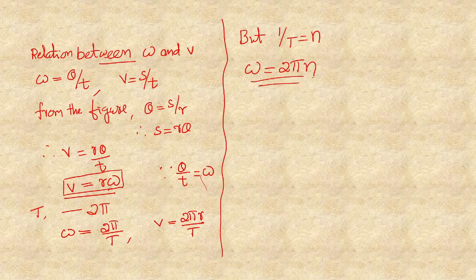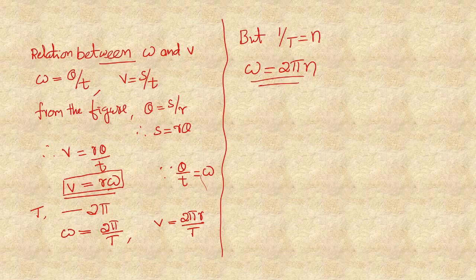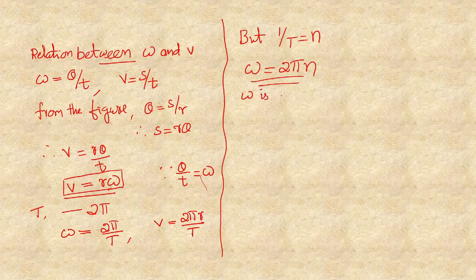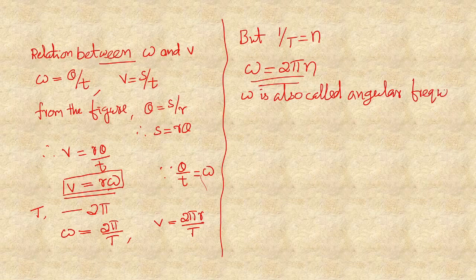The angular velocity is obtained by multiplying the frequency by the angle 2π. Here N is the frequency and omega is the angular velocity. So when frequency is multiplied by the angle 2π, we get angular velocity. Since omega equals 2πN, omega is also called angular frequency.